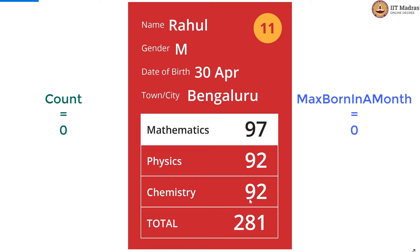We begin from the month of April. The count variable is initialized to 0 and max_born_in_a_month is also initialized to 0. The count variable is now incremented by 1 because we have found one card in April.